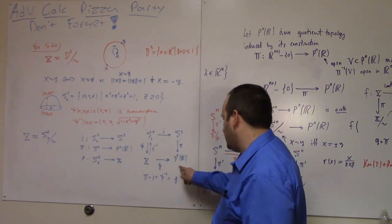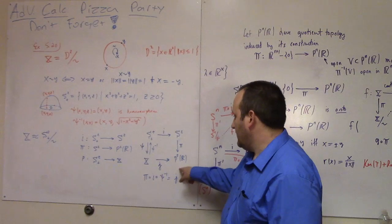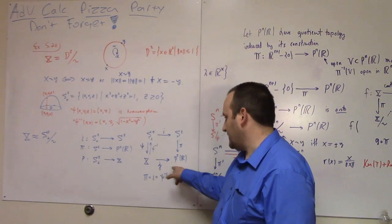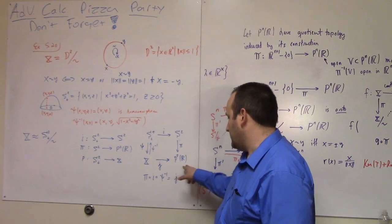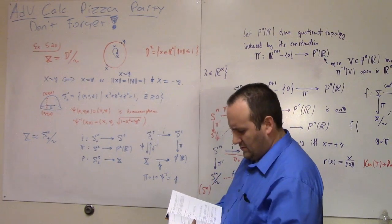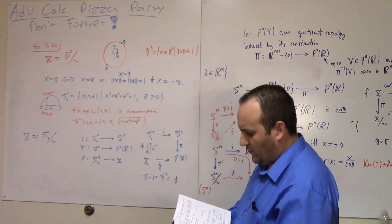We've already proved that this was Hausdorff, right? Because we went through those arguments last time. So we have a continuous map from a compact space to a Hausdorff space, and it's also a bijection. He says we have a bijective map from a compact space to a Hausdorff space, so J is a homeomorphism.